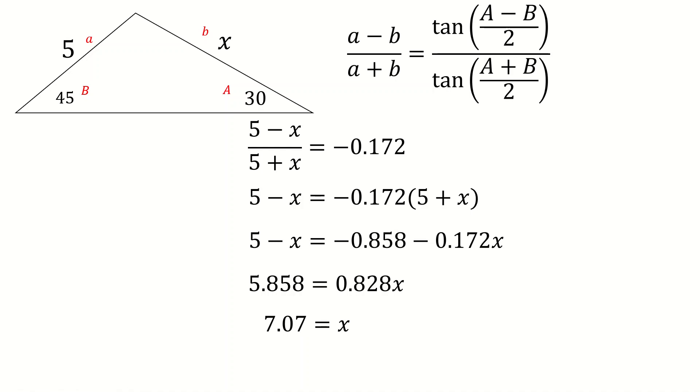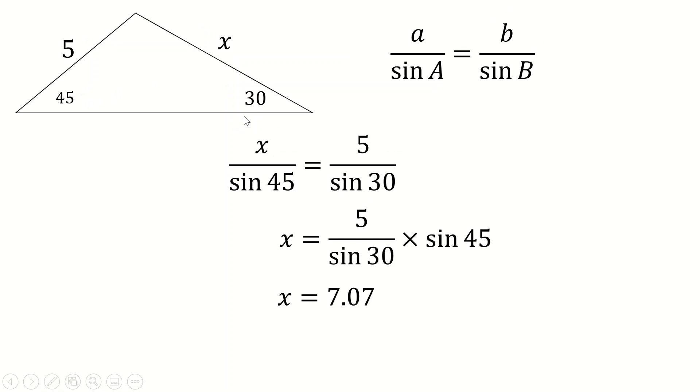And that's all fine, until you realize just how much easier that would have been if you had just used sine rule. Because sine rule just says that x over sine 45 is 5 over sine 30. And you get the thing done in three lines of working, which is better.